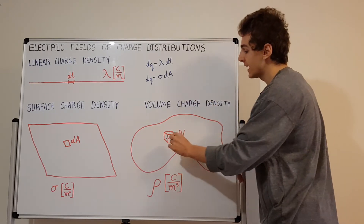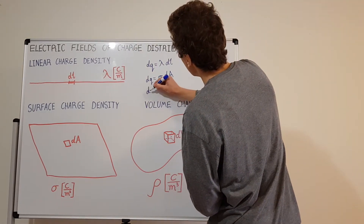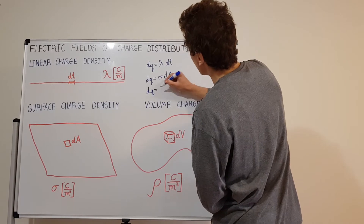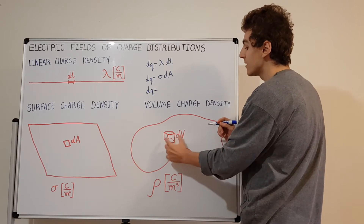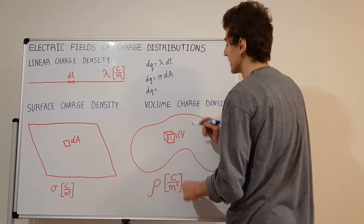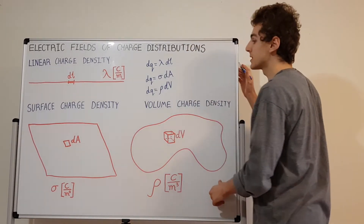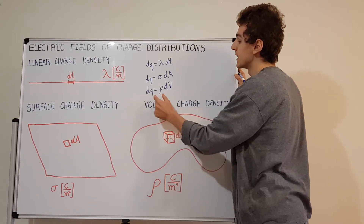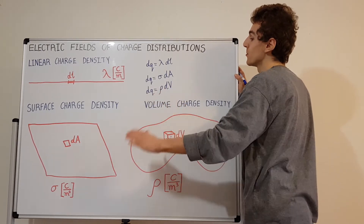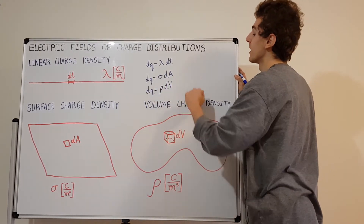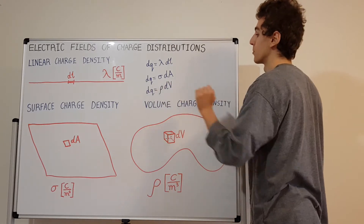So how would a tiny chunk of charge look in this scenario? Following the pattern we've seen, dq equals rho times dv — a tiny volume times the density. Let's check the units: dq has units of charge, rho is charge per unit volume, and dv is volume. So the units of volume cancel and we're left with units of charge. In SI units both sides are going to be coulombs.